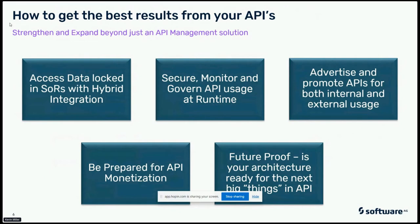The first thing we have to do is be able to get to the data. This data is typically locked in systems of record — whether those are old-school mainframes and ERP systems that are on-premise, applications slowly moving to private clouds in AWS, Azure, or Google, or systems of record being lifted and shifted into a public cloud, like SAP HANA. The first goal is really to have a way to access that data, because once you have that data you can leverage it — but if you cannot get secure access to that data, the rest of it is useless.